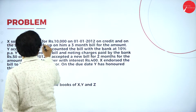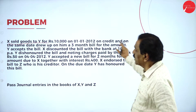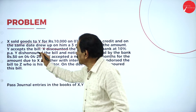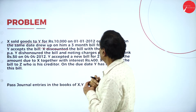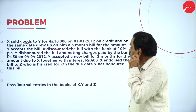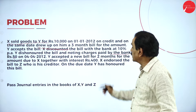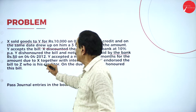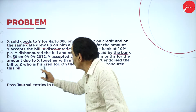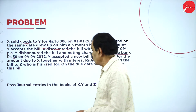X sold goods to Y for Rs. 10,000 on 1-1-2012 on credit. On the same day, he drew a 3-month bill for the amount. Y accepted the bill. X discounted the bill with the banker at 10% per annum. Y dishonored the bill and noting charges paid by the bank were Rs. 50. On 4-4-2012, Y accepted a new bill for 2 months for the amount due together with interest Rs. 400. X endorsed the same bill to Z, who is a creditor. On the due date, the bill was honored. Pass the entry in the books of X, Y and Z.